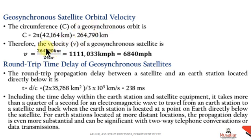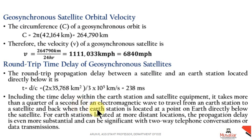Another term related to geosynchronous satellites is the round trip time delay. It is the time delay within the earth station and the satellite equipment — it takes more than a quarter of a second for an electromagnetic wave to travel from an earth station to a satellite and back when the earth station is located directly below the satellite. This round trip time delay can be calculated using the equation t = d/c, representing the propagation delay between a satellite and an earth station.